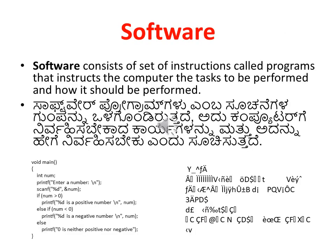Software consists of a set of instructions — one by one, line by line — which are called programs. These are the instructions that tell the computer what tasks are to be performed and how they should be performed.